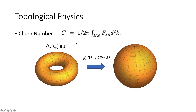Also, if we think of two-band models — two-band quantum states — as a map from the torus onto the sphere, then we can calculate a quantity called the Chern number as the integral, or the sum, of the Berry curvature of each quantum state on the torus. This is a topological invariant that characterizes the two-band quantum state.